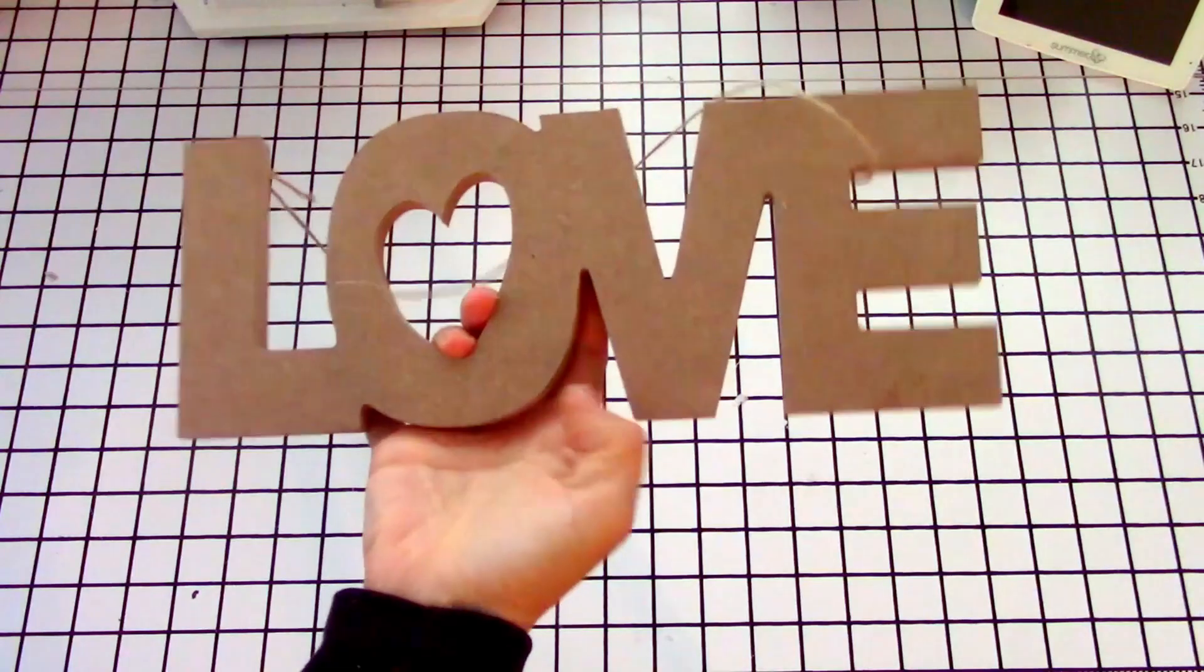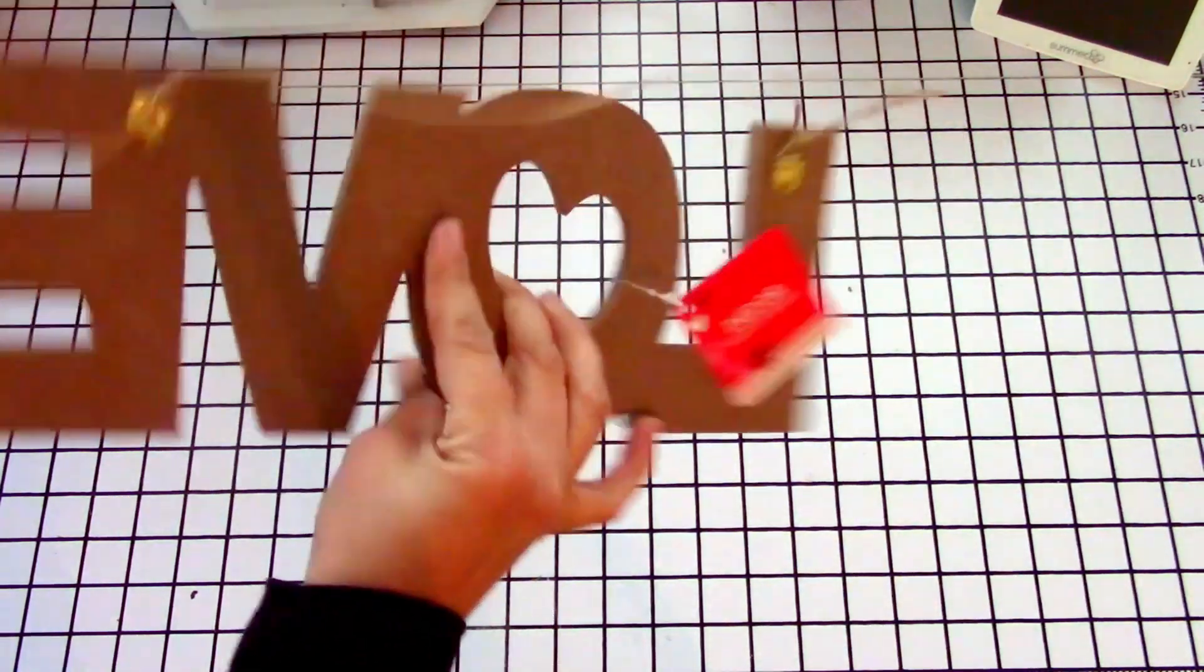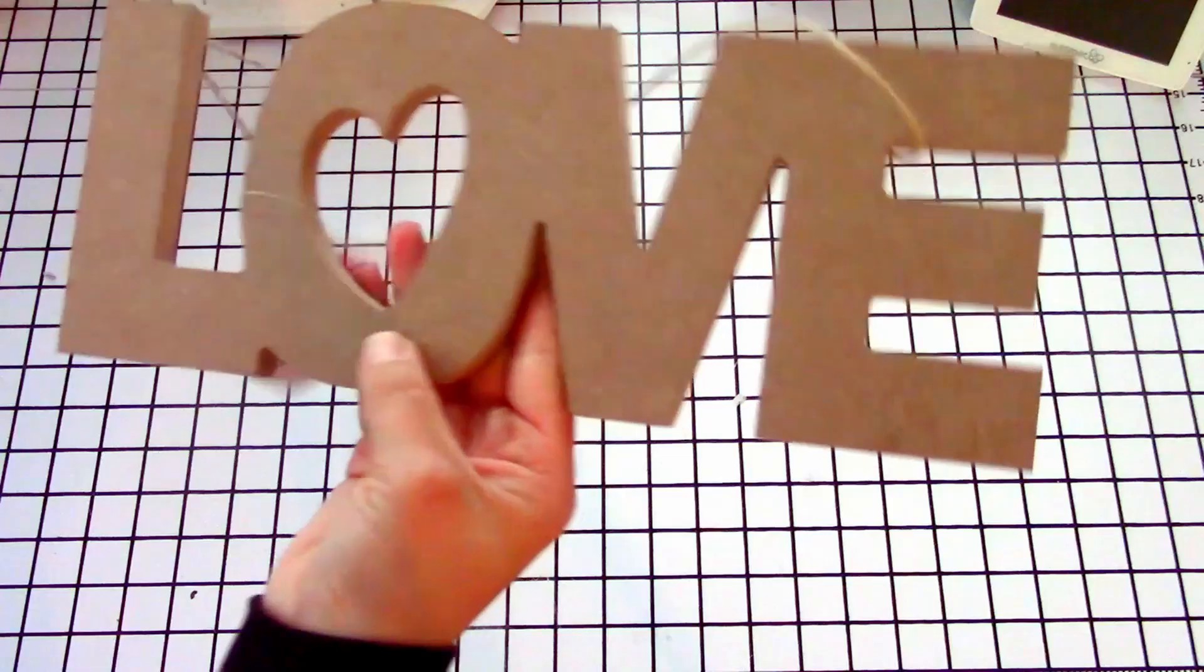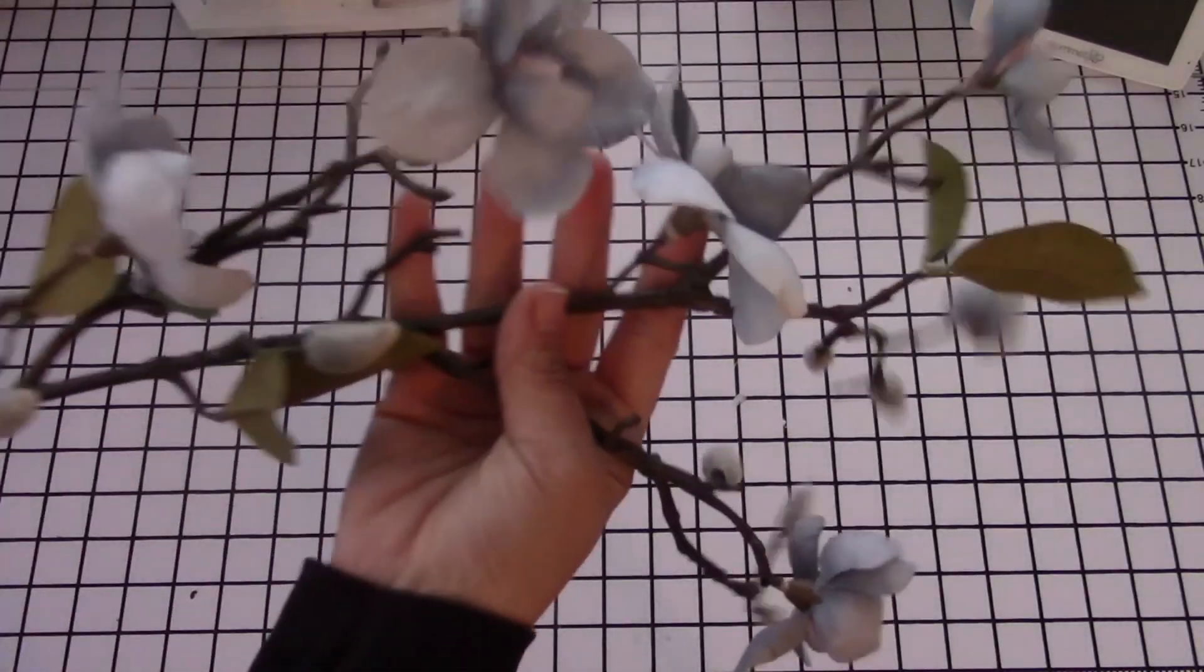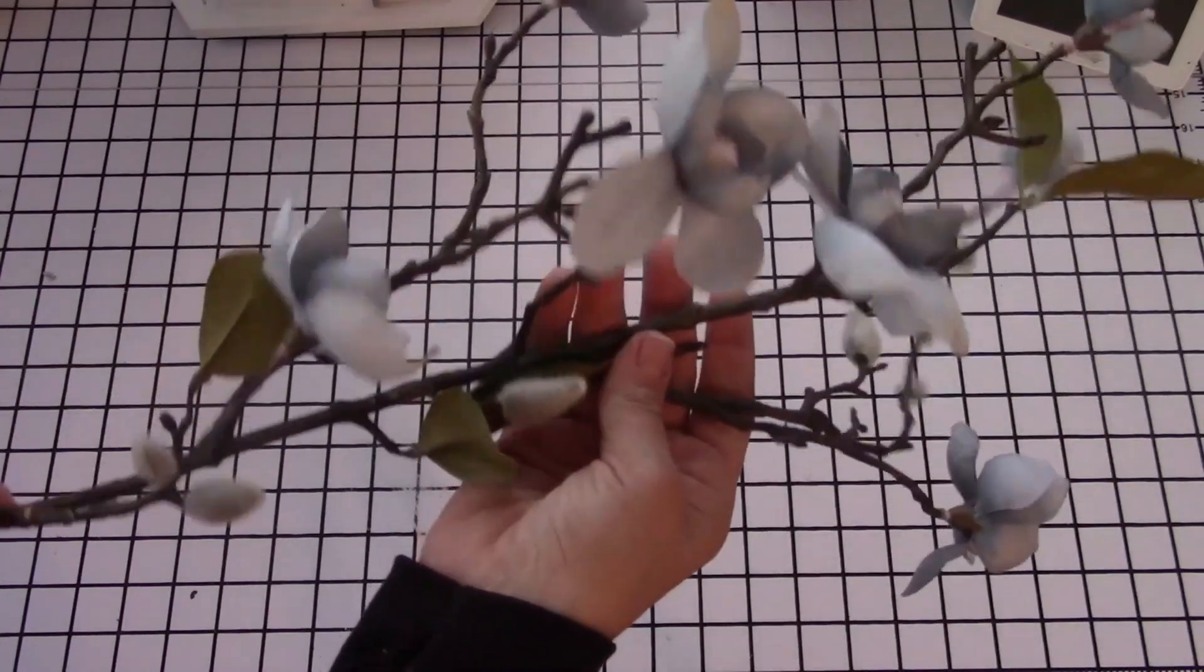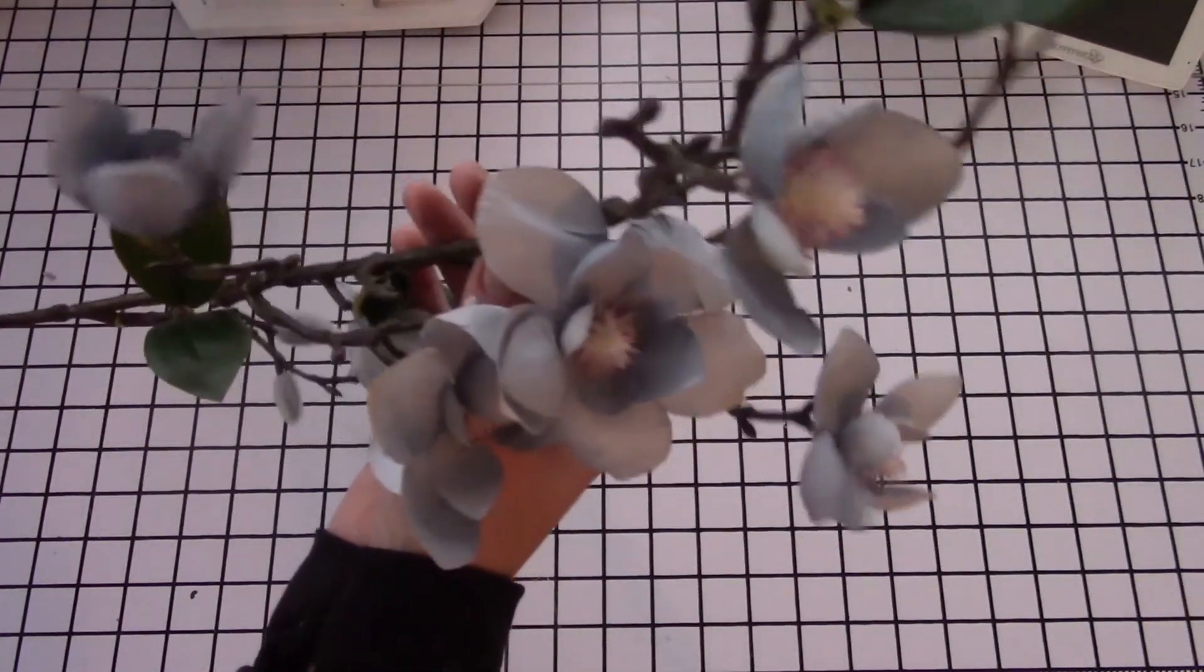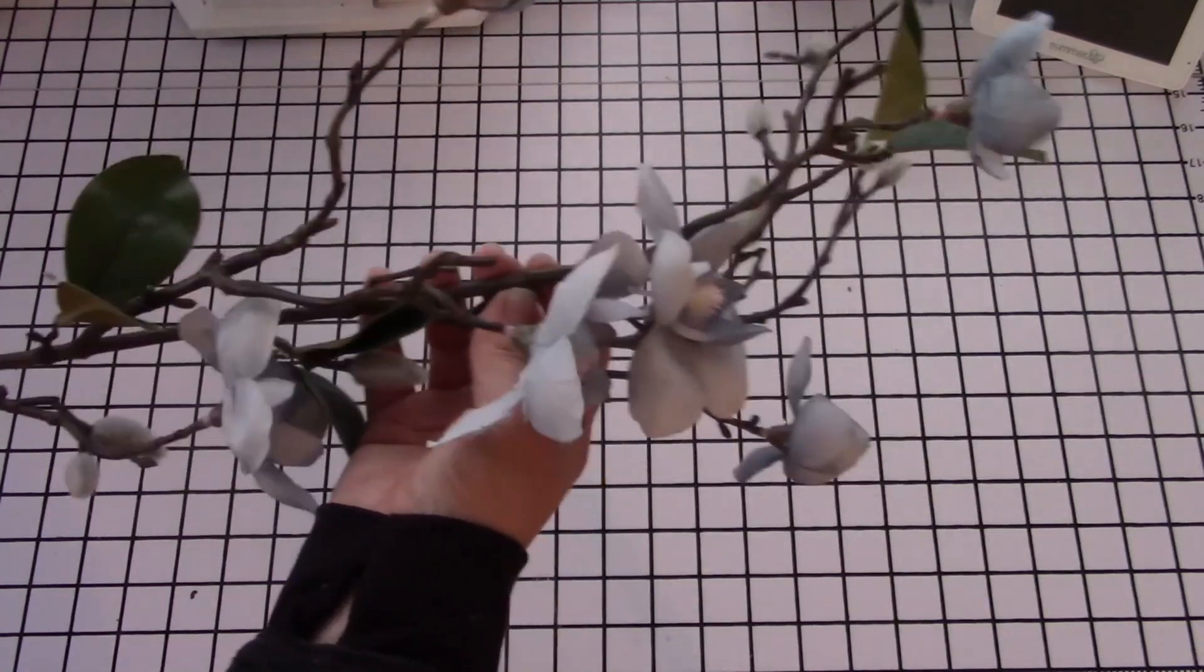Now, on to project number two. Project number two is also super quick and simple. I scooped up this love sign from Dollar Tree, and it's just so nice for a dollar store piece. It just needs a little bit of paint. I also had these flowers that I got from Michaels on clearance. I think they were about $1.99 or $2.99, something like that, and I'm just in love with the color.